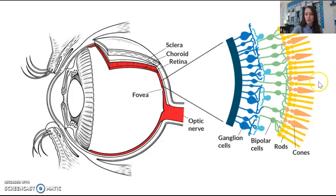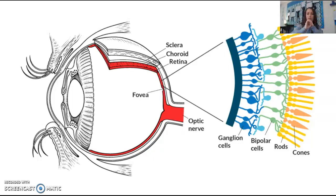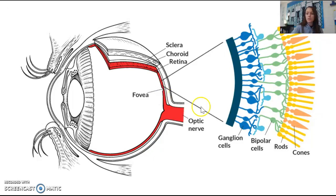Cones are concentrated in the central part of the back of the eye. An easy way to remember their functions is that they all start with C: cones help you see color, they help you see clarity and fine detail, and they're concentrated in the center of the eye. So cones give you color, clarity, and are found in the center.